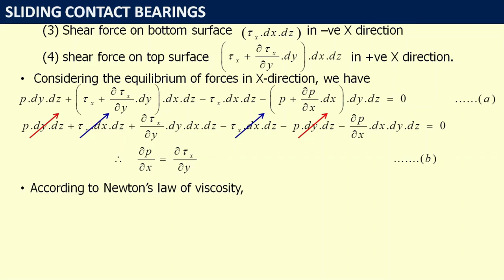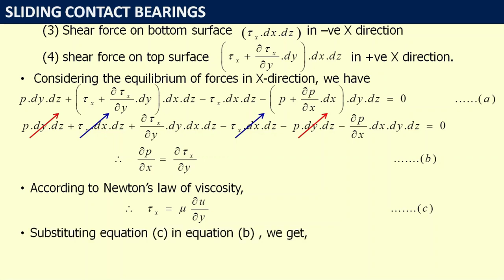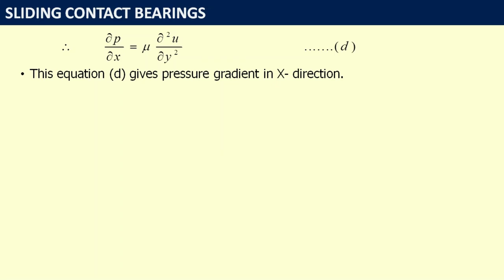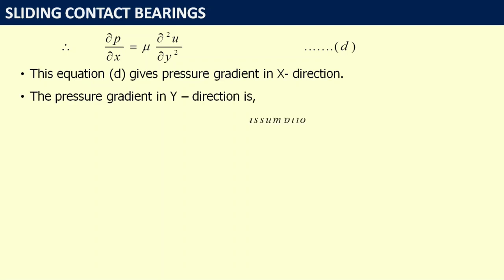The pressure gradient in the y direction is del P / del y = 0 according to assumption 6 — there is no flow in the lateral direction (equation E). For the pressure gradient in the z direction, considering forces in the y-z plane on the fluid element, the pressure force on the inlet face is P × dx × dy and on the exit face is (P + del P/del z × dz) × dx × dy. Shear forces tau_z act on bottom and top surfaces similarly to the x-direction analysis.